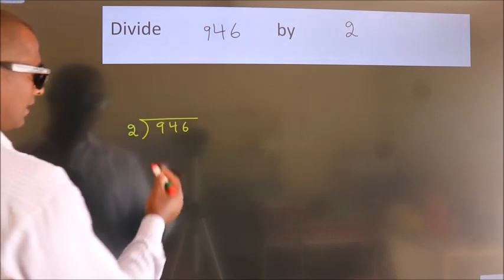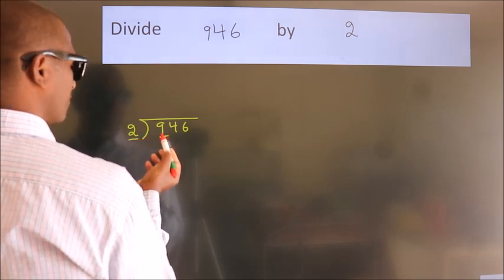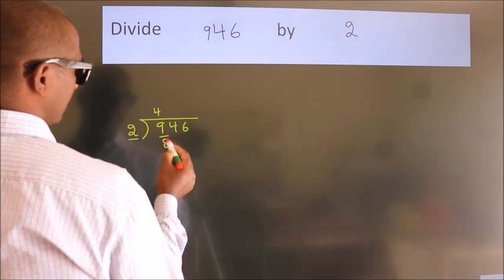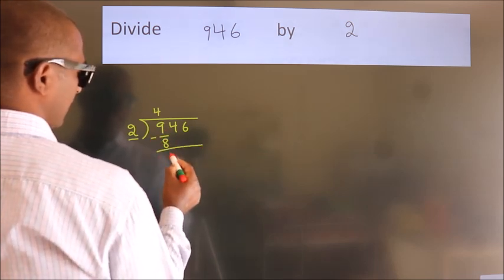Next. Here we have 9, here 2. A number close to 9 in 2 table is 2 4s 8. Now we should subtract. We get 1.